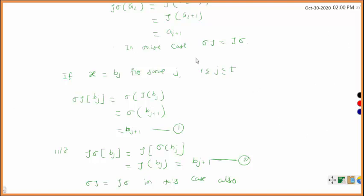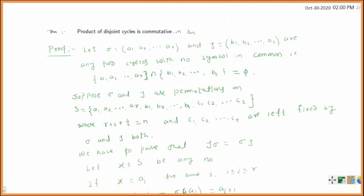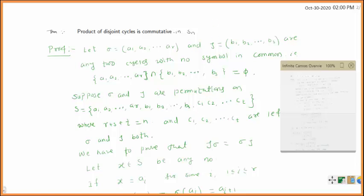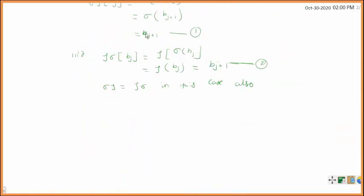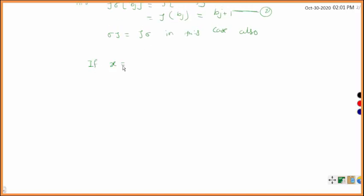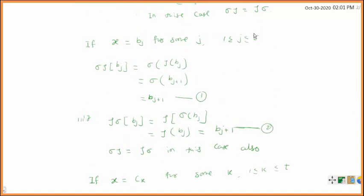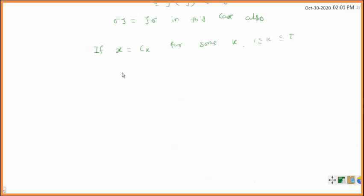What happens if x is equal to ck? The set S contains {a1,...,ar, b1,...,bs, c1,...,ct}. So the last case is: if x equals ck for some k, where 1 ≤ k ≤ t. We need to show sigma tau equals tau sigma in this case as well.